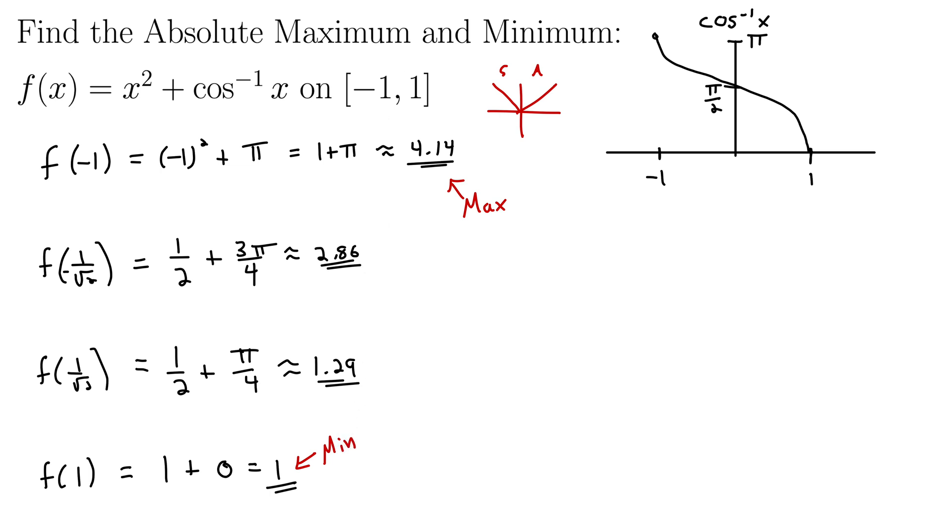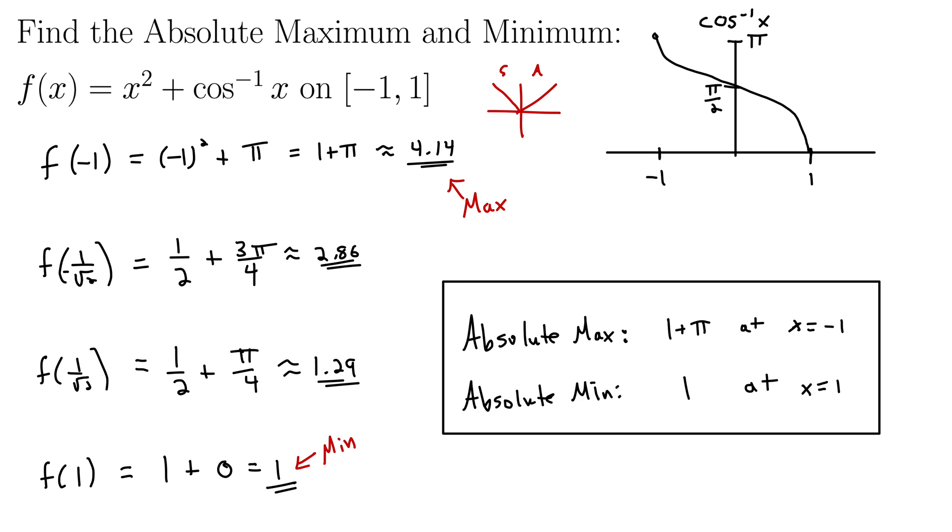So then the way we might write our answer is absolute max of, let's keep it as pure as possible with no rounding, so I'll say one plus pi at the point x equals negative one. And then our absolute min is one at the point x equals one. So it's interesting. Though we had critical points happening in between the endpoints, our maximum and our minimum still occurred at the endpoints.